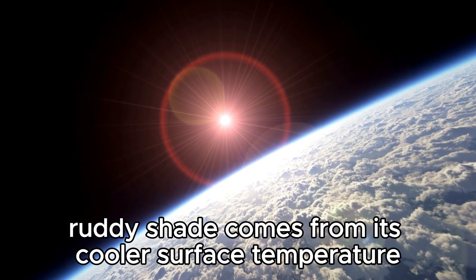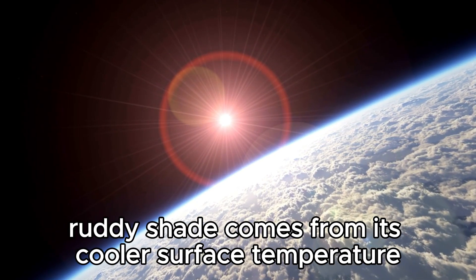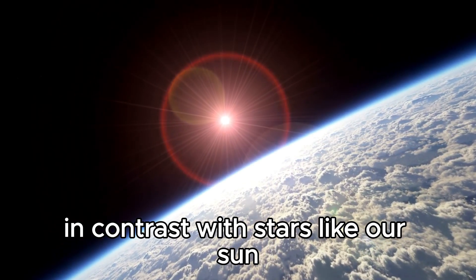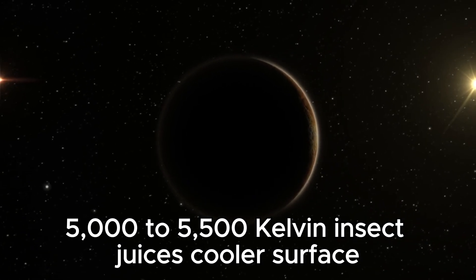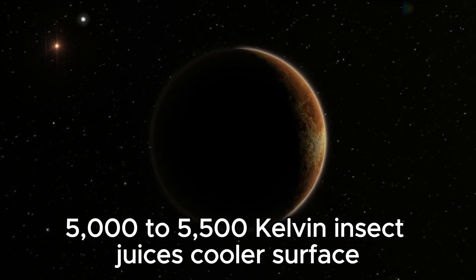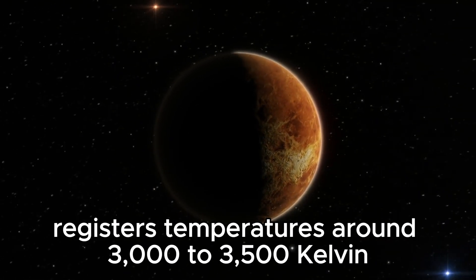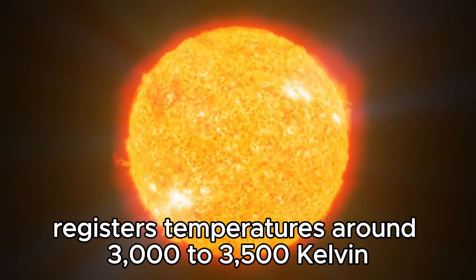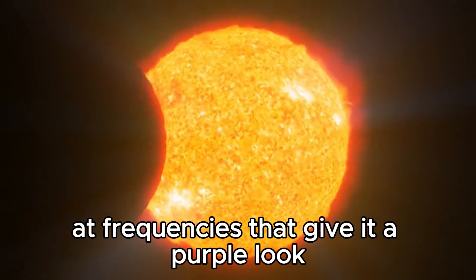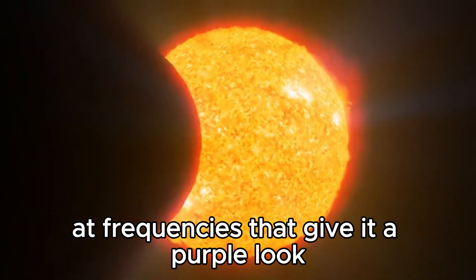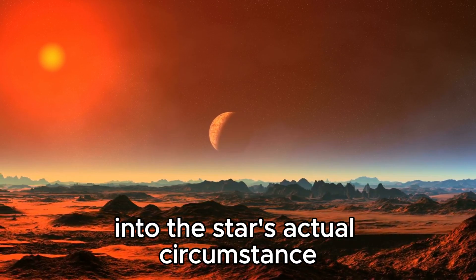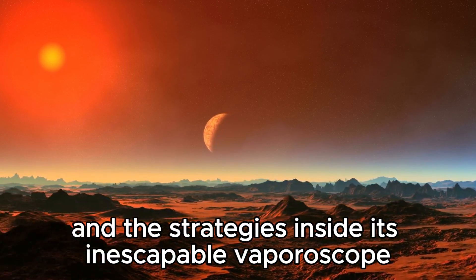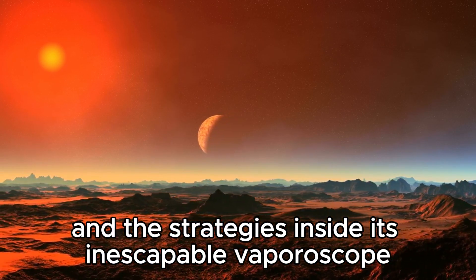Betelgeuse's unique ruddy shade comes from its cooler surface temperature in contrast with stars like our Sun. While the Sun's surface temperature is around 5,000 to 5,500 Kelvin, Betelgeuse's cooler surface registers temperatures around 3,000 to 3,500 Kelvin, radiating light at frequencies that give it a purple look. This shading isn't simply apparent, however, it offers insights into the star's actual circumstance and the processes within its inescapable gaseous envelope.